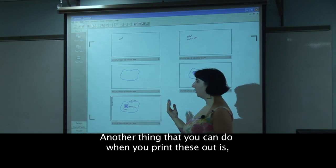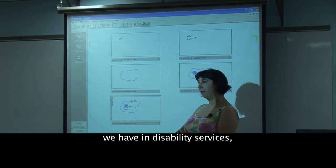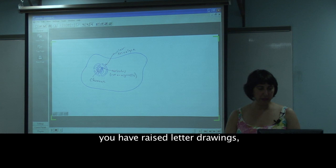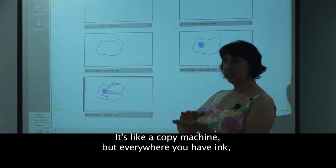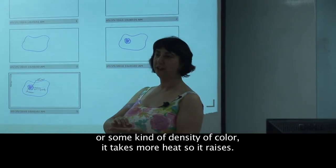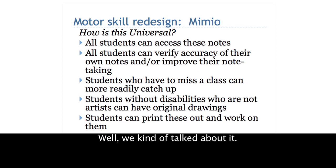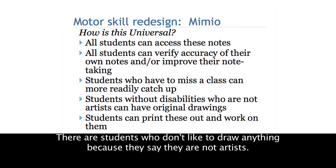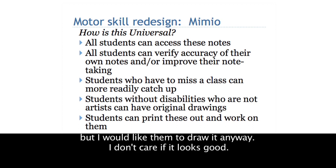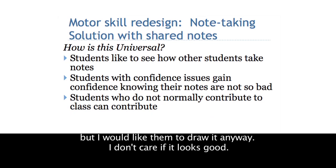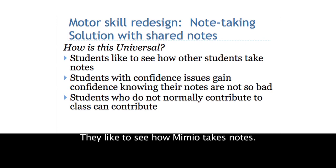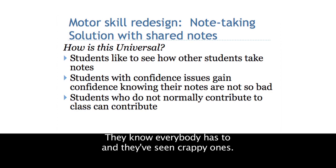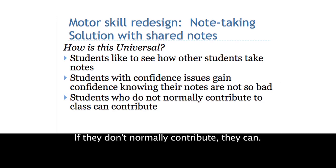Mimeo is a free program you can get for your computer — you register but they don't spam you. In play mode, it writes everything back in the sequence you did it, so students can see what you did and when, and zoom in. You can view it in multi-page form, print each saved screen separately, or just print the final summary — in color, with all the same colors from the board. In Disability Services, we also have a machine that does raised letter drawings: wherever there's ink or color density, heat raises the surface. Students can verify their notes, catch up if absent, and gain confidence by seeing how others take notes.